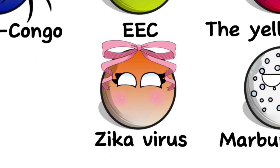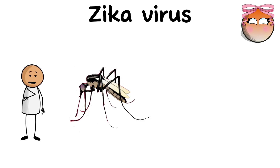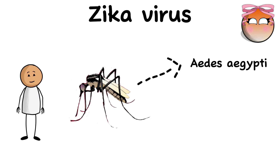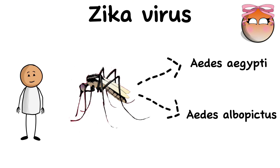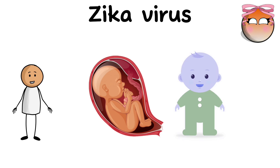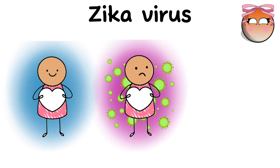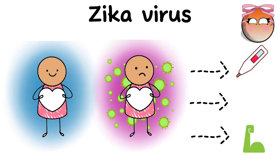Zika virus. Zika virus is transmitted through the bites of infected mosquitoes, mainly Aedes mosquitoes, such as Aedes aegypti and Aedes albopictus. The virus can also be transmitted vertically from a pregnant woman to a fetus during pregnancy, causing birth defects. Infection with the Zika virus can be asymptomatic or manifest as mild symptoms such as fever, rashes, joint and muscle pain, conjunctivitis, and fatigue.